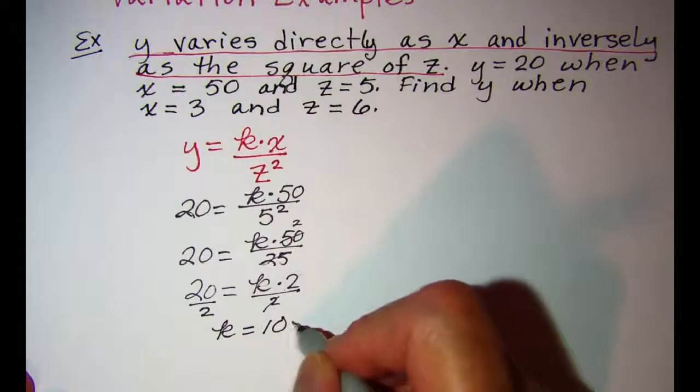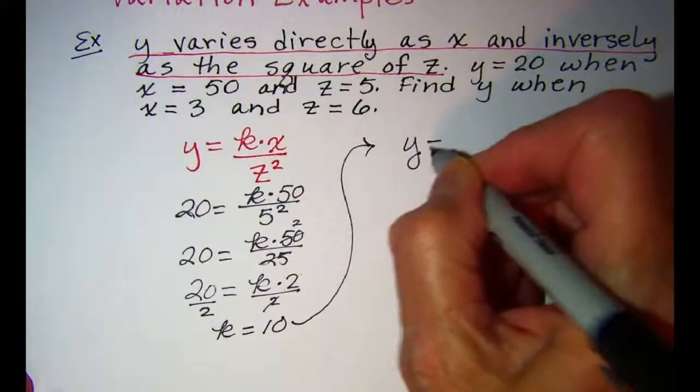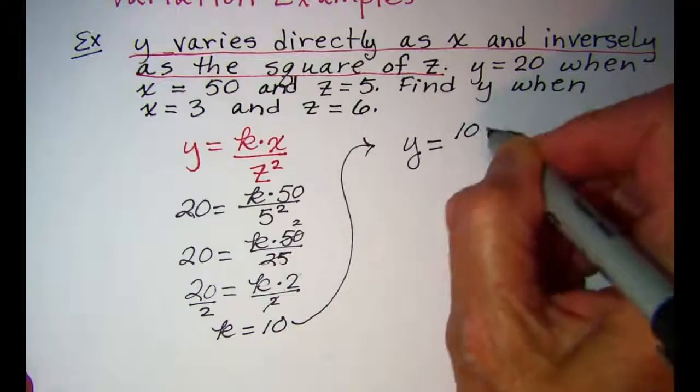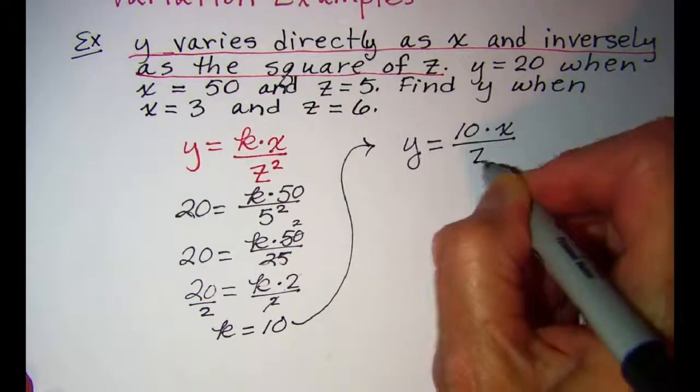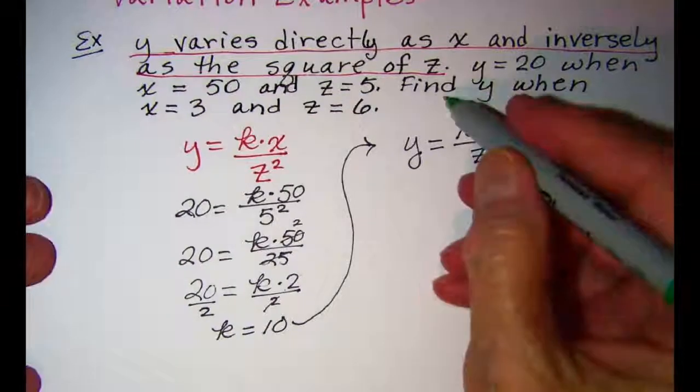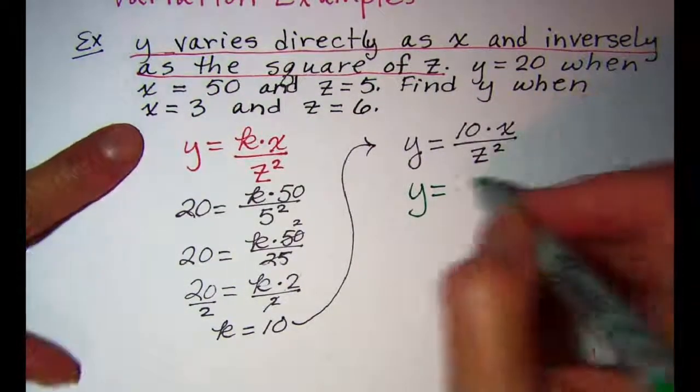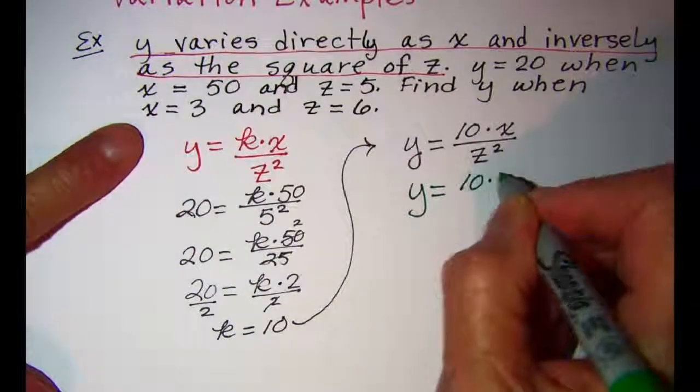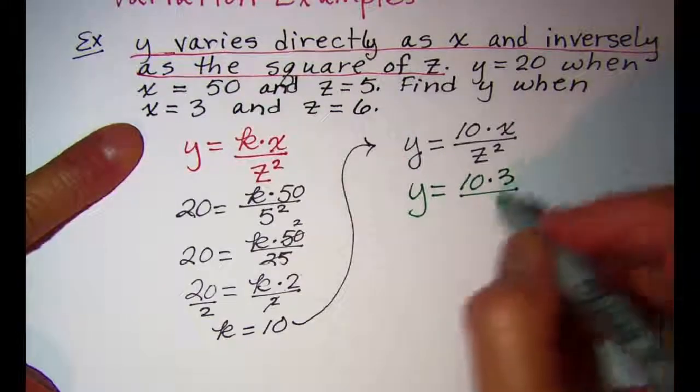Then we'll plug this k value into our equation. y is equal to 10 times x divided by z squared. Now we have enough information to finish our problem. Find y when x equals 3 and z equals 6.